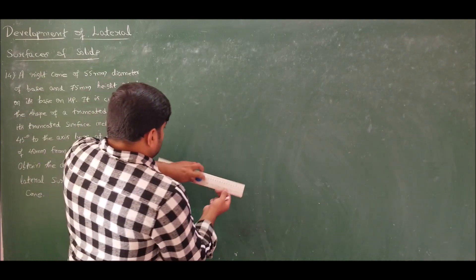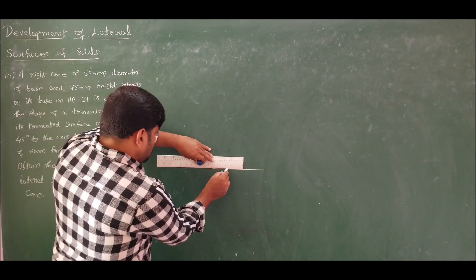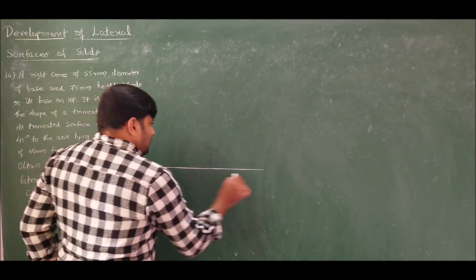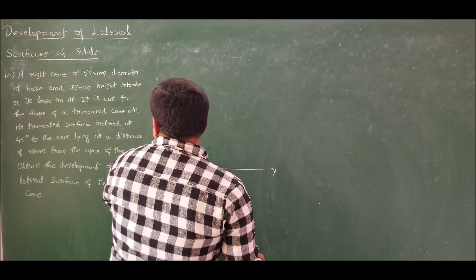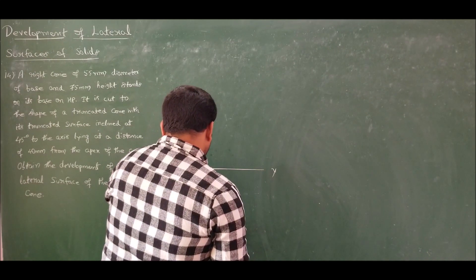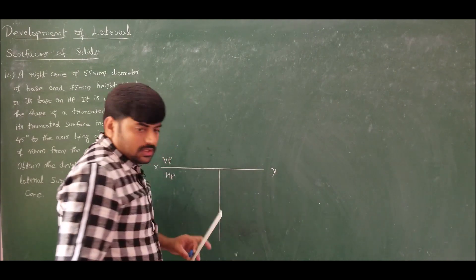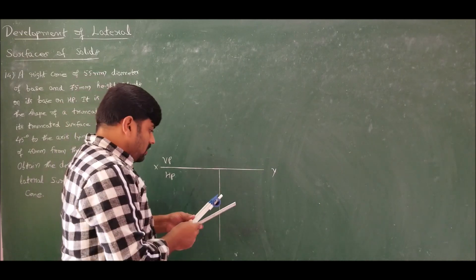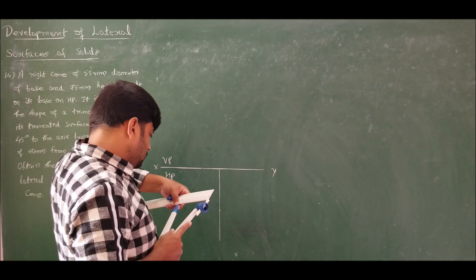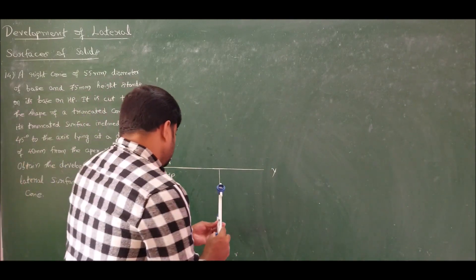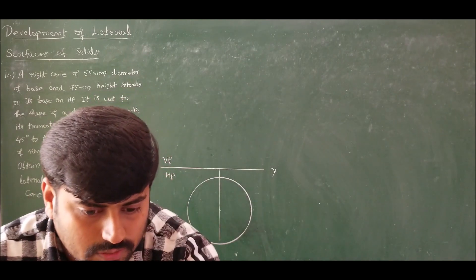First, let us draw the front and top view of the cone. The top view of a cone is a circle and the front view of a cone is a triangle. Mark the XY line, VP and HP. The cone has 55 mm diameter, so the radius is 27.5 mm. Measure 27.5 mm and draw a circle for the top view. Then take the projection and draw the front view.